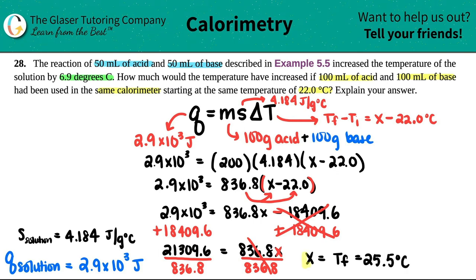There you go. So how much would the temperature have increased if 100 mL of acid and 100 mL of base were added together? So now just read between the lines. They're saying how much would the temperature have increased, so they're really looking for the ΔT. They don't care about what the final temperature is, they want to know how much it increased.